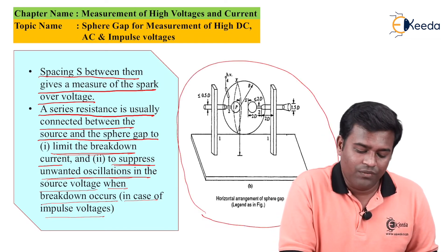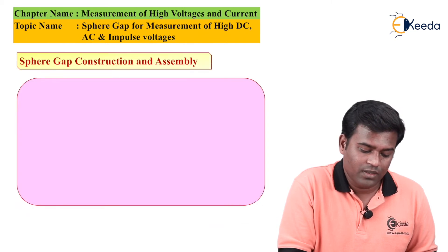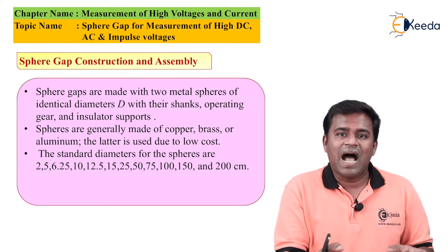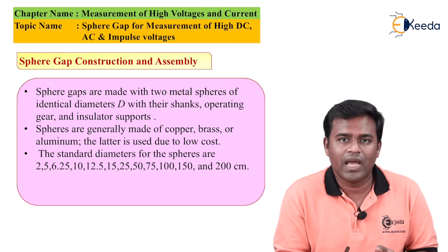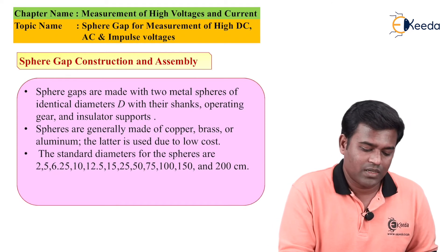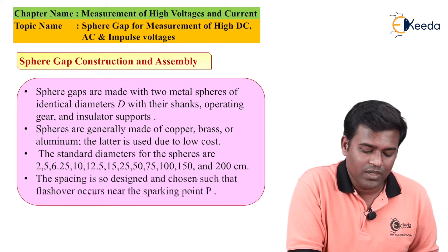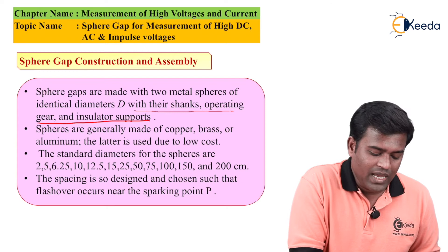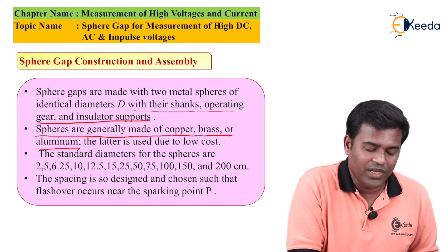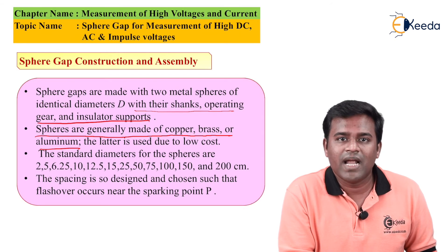This is the arrangement for the horizontal position where two spheres are separated by some distance. Sphere gaps are made with two metal spheres of identical diameters D, with their shanks, operating gear, and insulator supports. Spheres are generally made of copper, brass, or aluminium. The material matters because the spark generated depends on the sphere gap material. Aluminium is sometimes used due to its low cost.